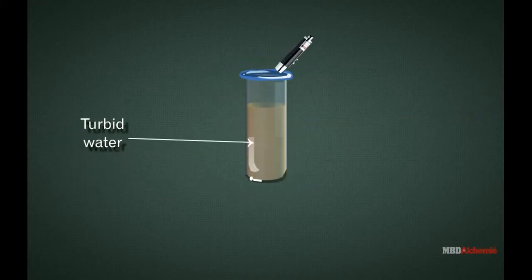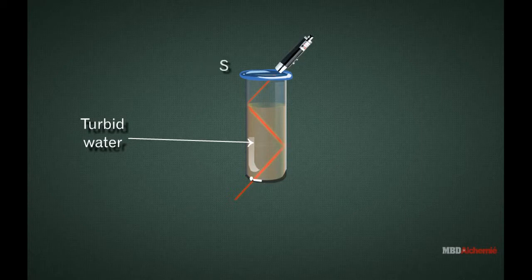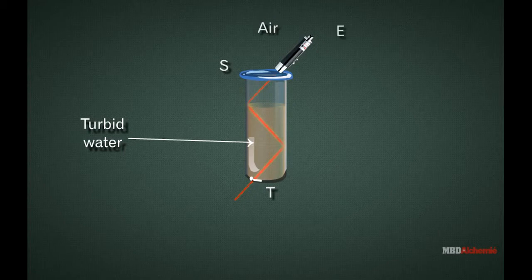Pour the turbid water contained in the glass beaker into a long glass test tube ST and direct the laser light beam from the top along EF. We adjust the direction of the laser light beam at such an angle